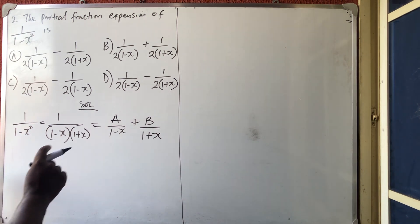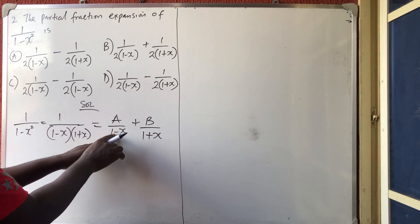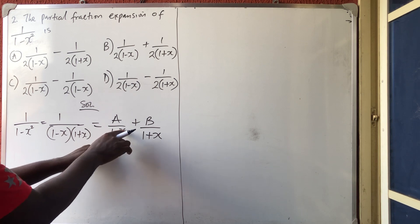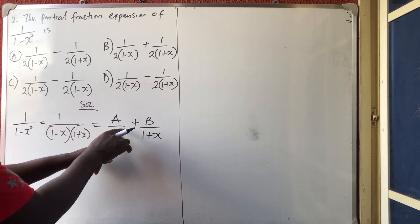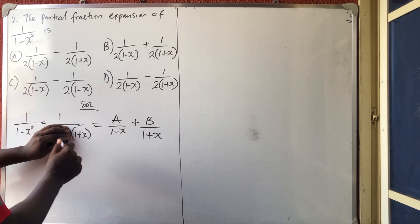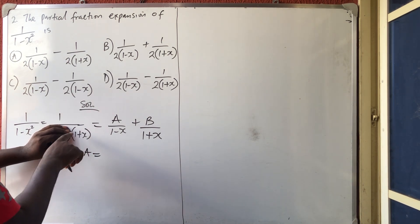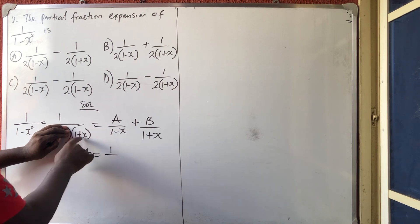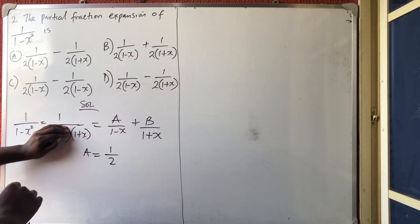Now, if you look at that, this is 1 plus x, 1 minus x. What are you going to put at x to make it 0? It's 1, so you close that 1 plus x here and then put it here. You have seen that my a is equal to 1 over 1 plus 1, which is 2. I've got my a to be 1 over 2.